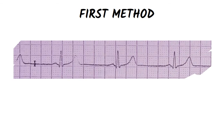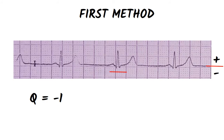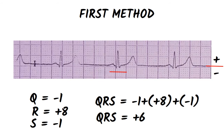We choose a QRS complex in lead 1 and determine the amplitude of each wave. What is above the isoelectric line is a positive value and what is under the isoelectric line is a negative value. We will choose this QRS complex. The amplitude of the Q wave is 1 mm and because it is under the isoelectric line, Q equals minus 1. The amplitude of the R wave is 8 mm, so R equals plus 8. The amplitude of the S wave is 1 mm, so S equals minus 1. We sum the three values, so the QRS complex in lead 1 is plus 6.